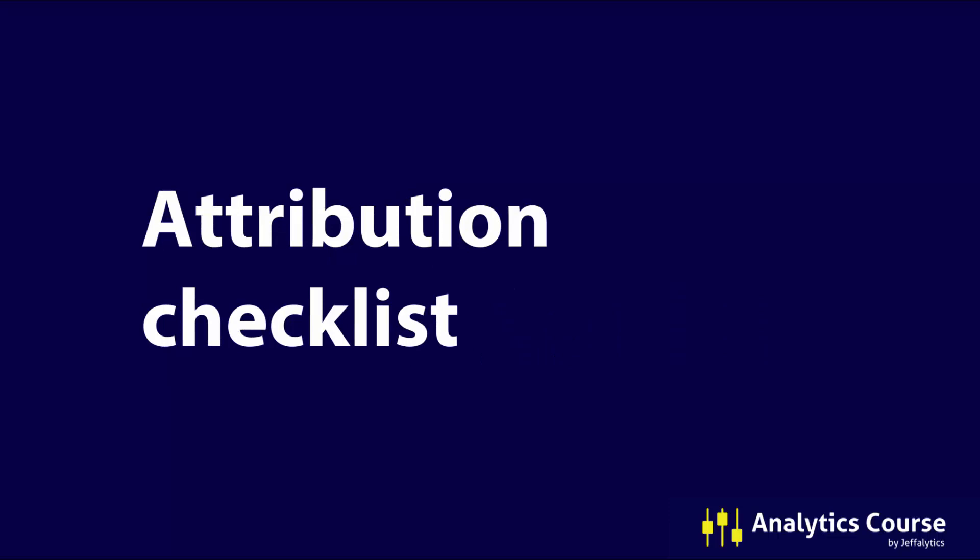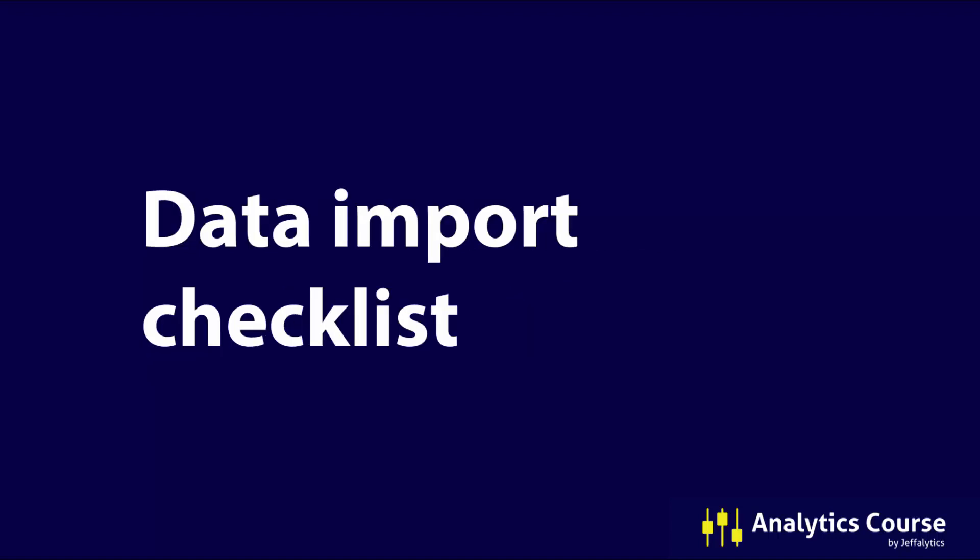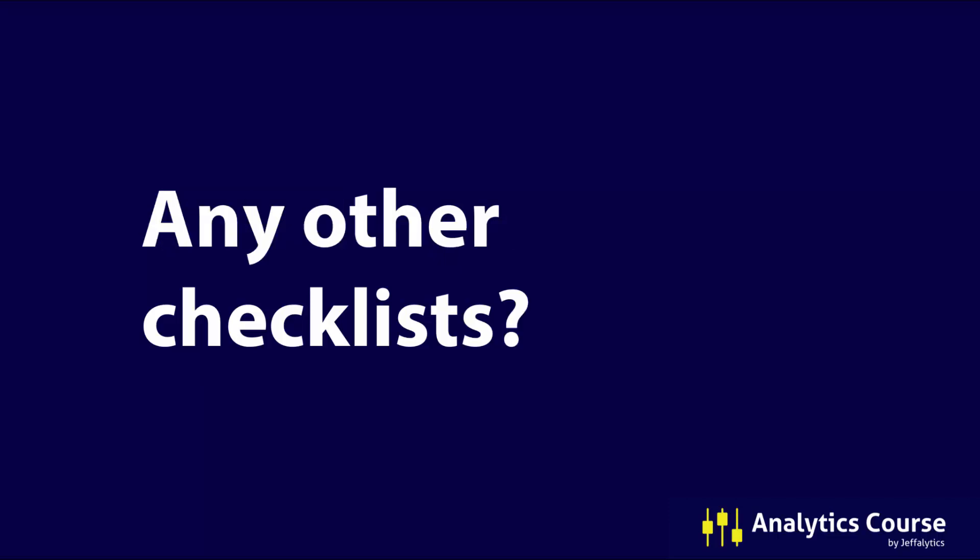Speaking of attribution, there should be an attribution checklist as well — how do you know which attribution model to use for your business, how do you evaluate the models, and how do you get the most insights from Google Analytics attribution tracking? You should have an account access log audit checklist too — who's accessing your account, who can see vital business information, and should they still have access? And finally, a data import checklist — when you import data into Google Analytics, you need to make sure you follow the proper steps.